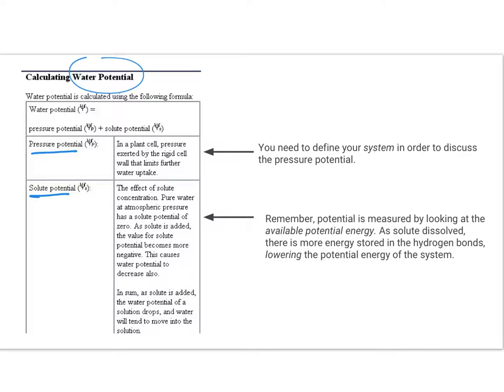Pressure is pretty easy. Pressure comes from the rigid cell wall that limits further water uptake. So our system, remember, is our cell. And so the pressure potential increases as the cell takes on water. That pressure inside the cell on the cell wall is increasing. Pressure starts at zero. At atmospheric pressure in an open container, there is zero pressure. As water starts to flow into that cell, it's taking on water. There's a higher pressure on the plant cell wall. And so that pressure potential is increasing. But essentially, pressure increases as the cell takes on water.